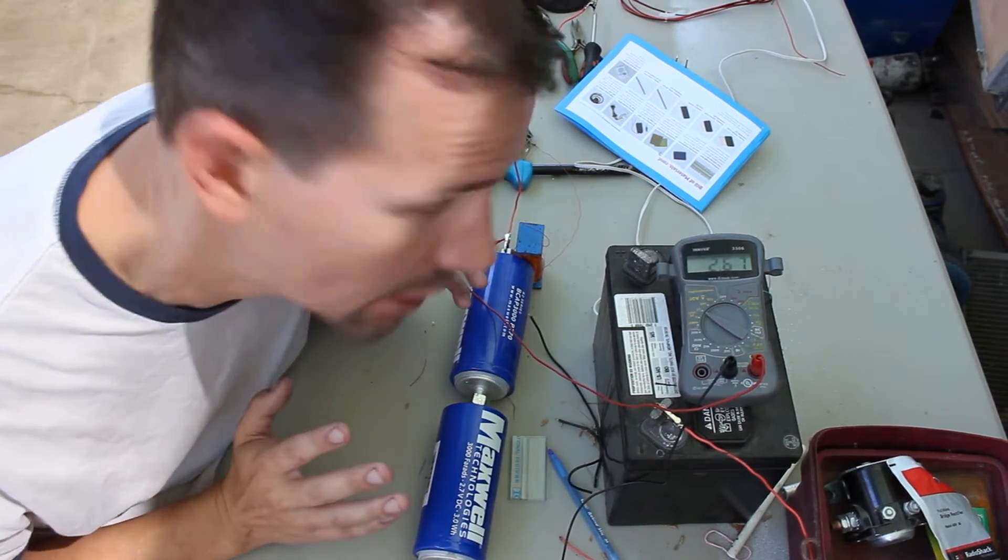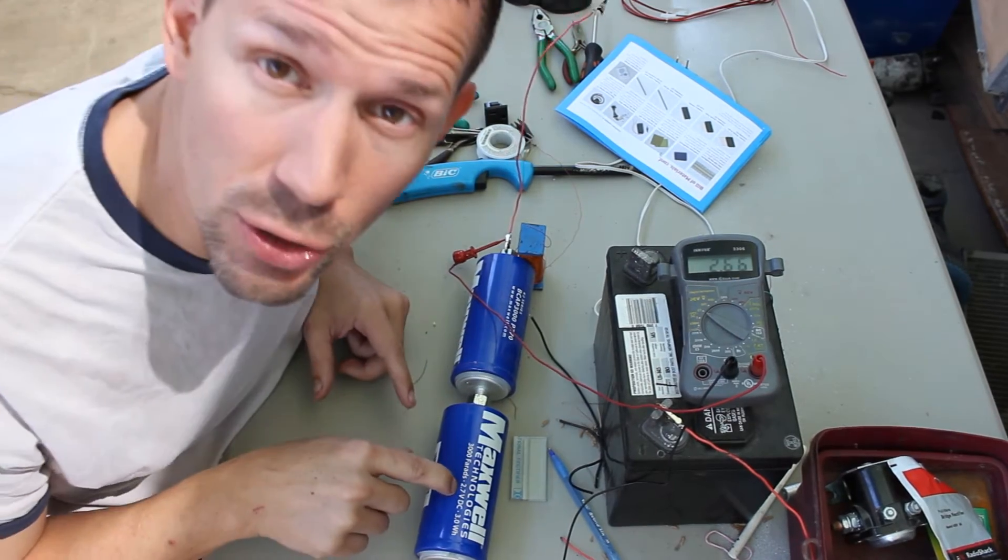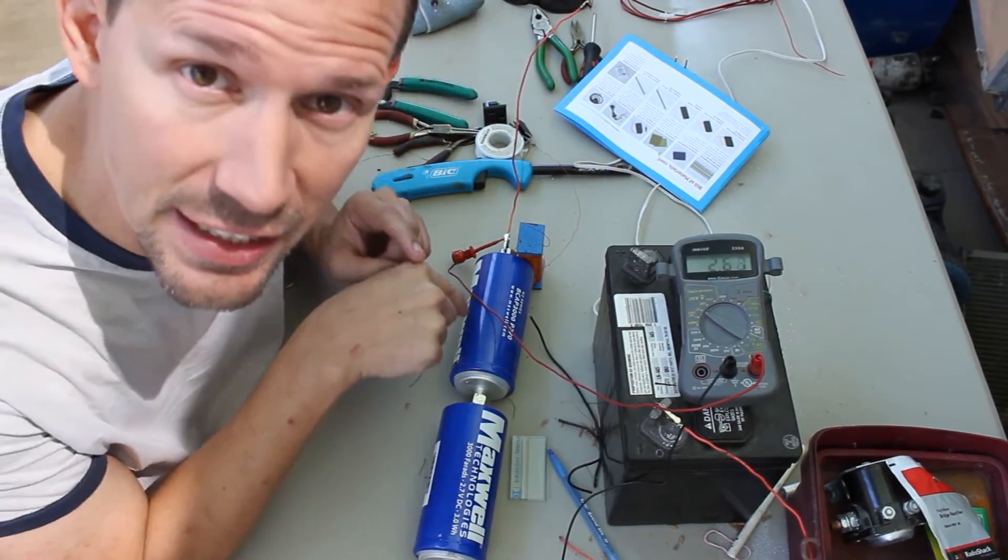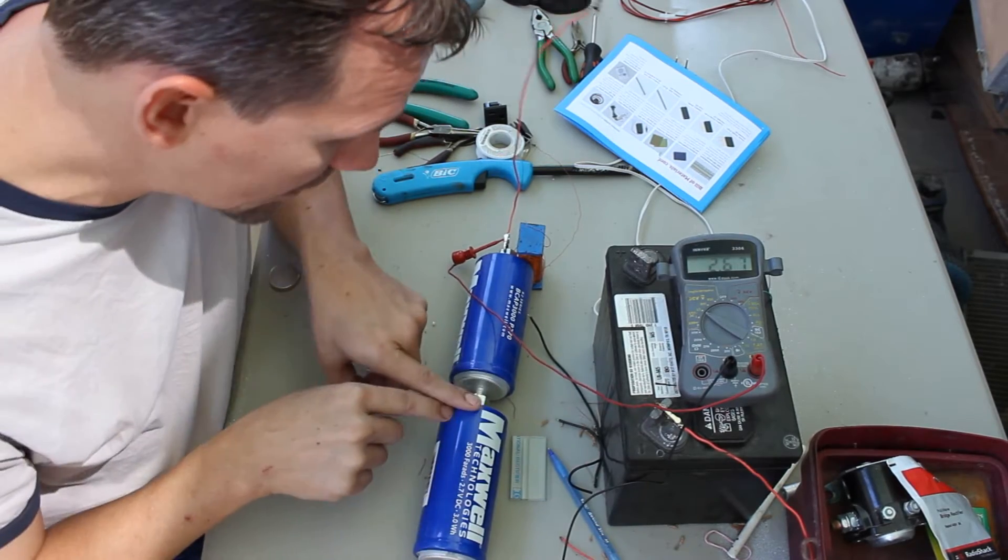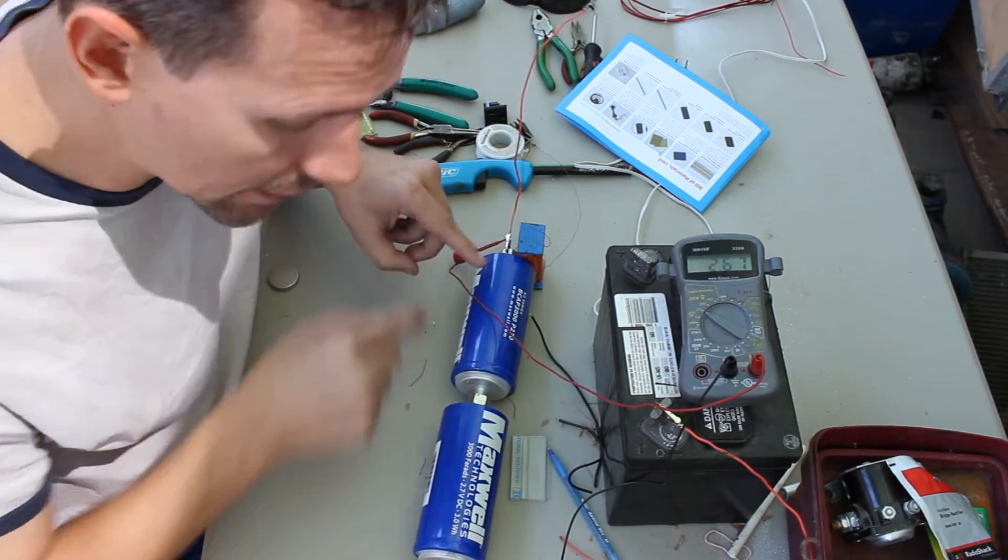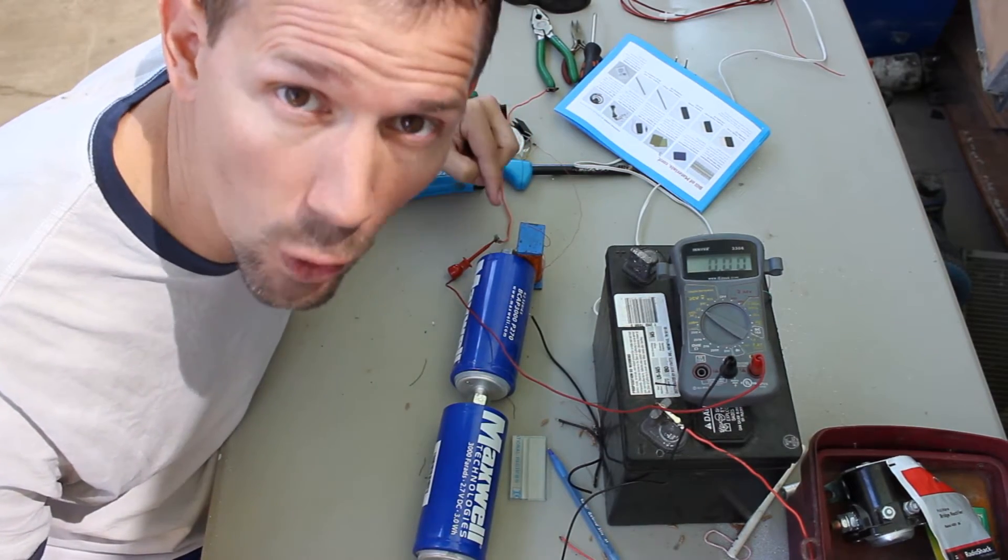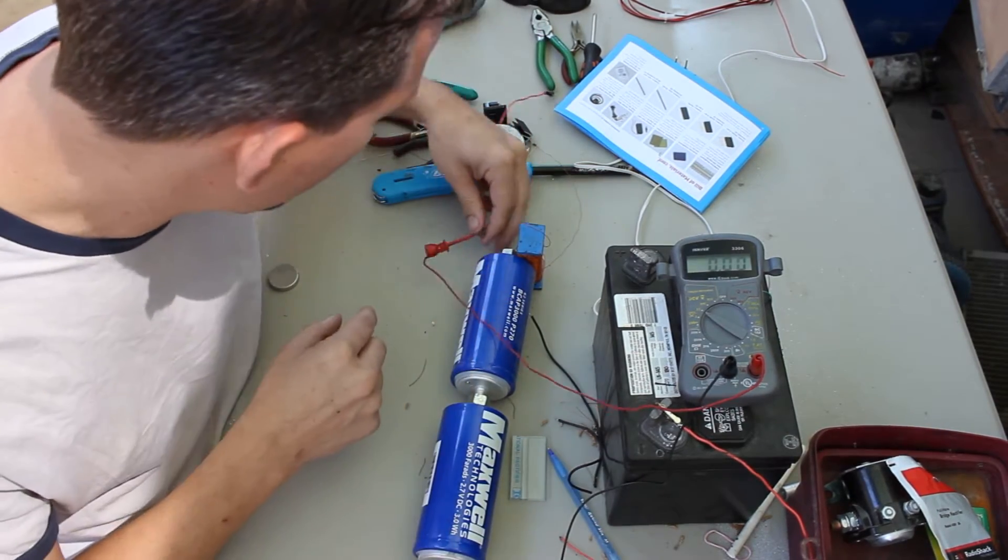I was hoping to catch some of the spark and stuff. So right now I've got my two 2.7 volt capacitors in series, so it goes negative, positive, negative, positive. So here at the ends I'm supposed to get 5.4 volts and oops, my thing just fell off.